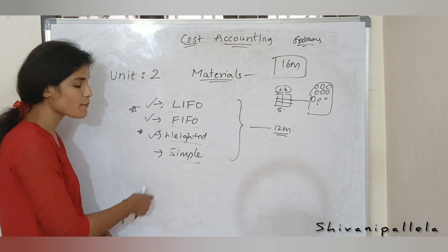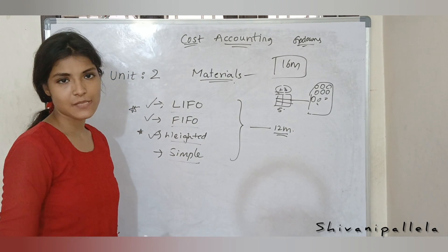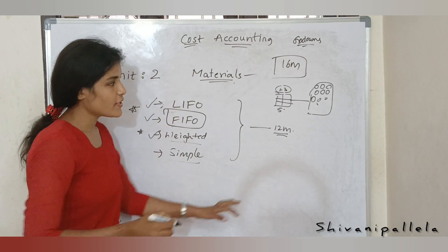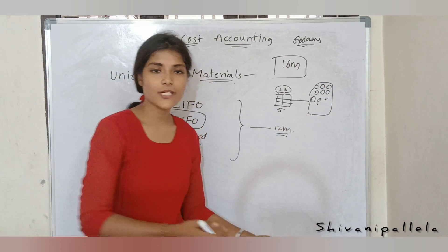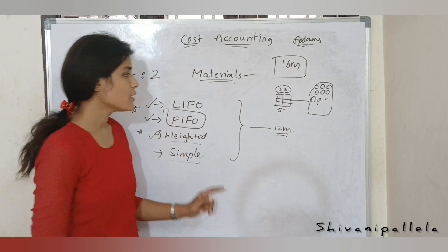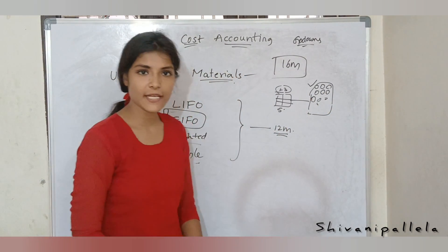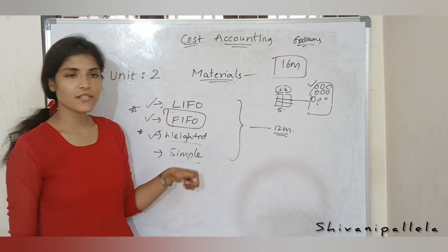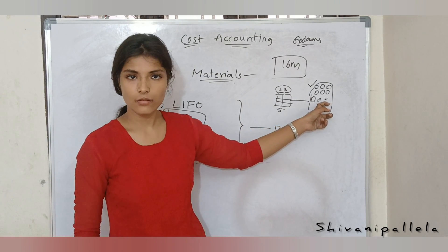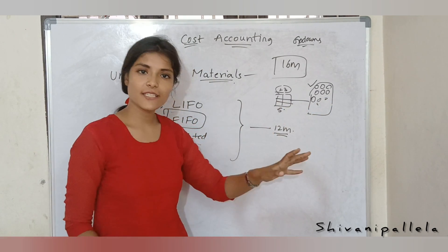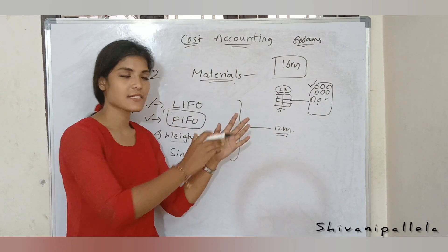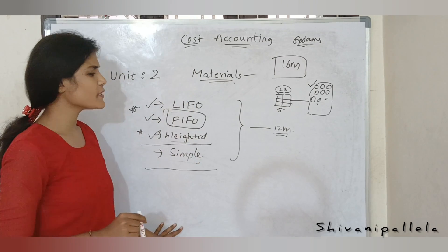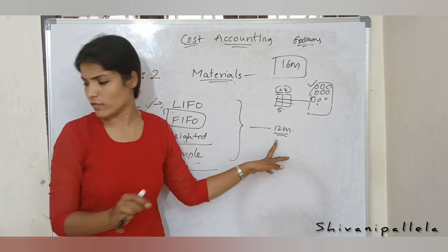When you want the bags, you can follow these 4 methods based on your business purpose. For FIFO — First In First Out — whatever bag was kept in the godown first, that is the one you issue first. For LIFO — Last In First Out — the last bag kept in the godown is issued first, then the second last, then the third last, and so on. For weighted and simple average, you calculate the rate or average rate. Using these 4 methods, you can compulsory score 12 marks easily.